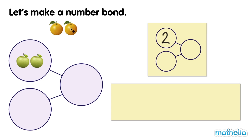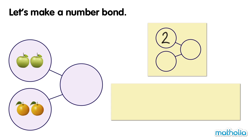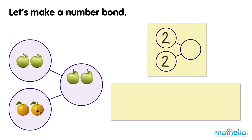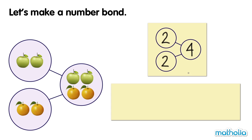In the other part, there are two oranges. Two. Let's find the whole of the parts. Two and two make four. Four. There are four fruits all together.